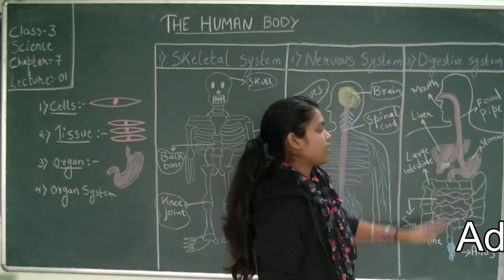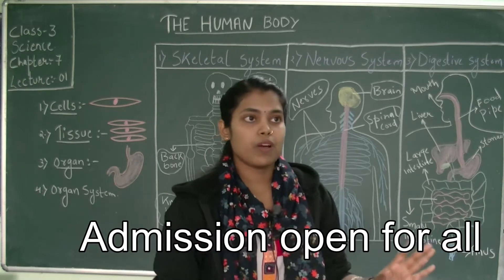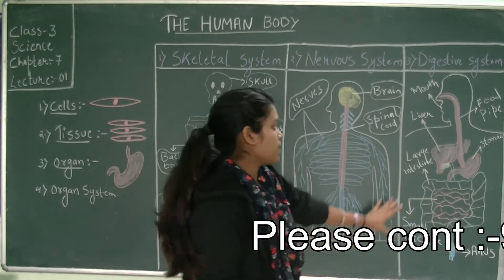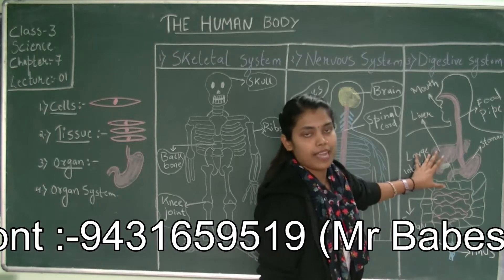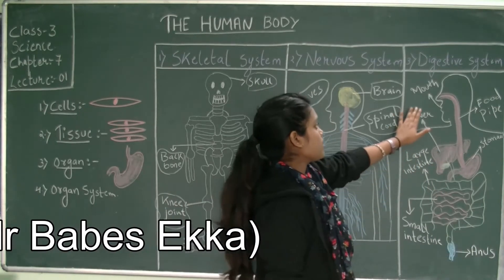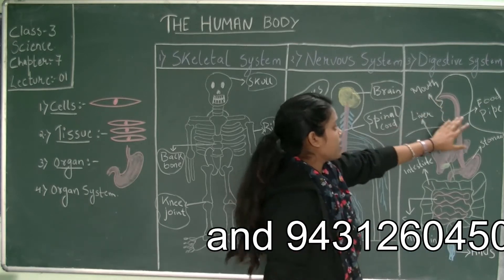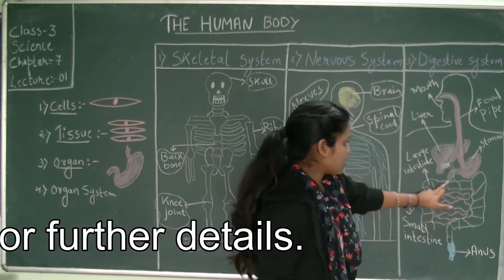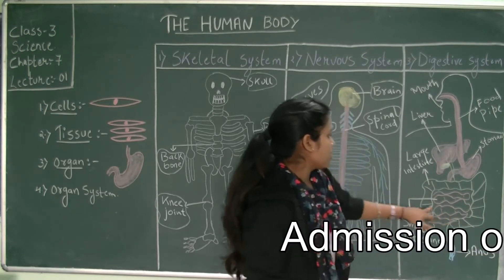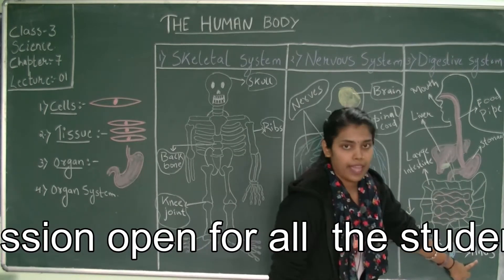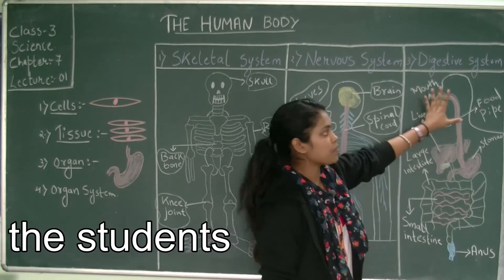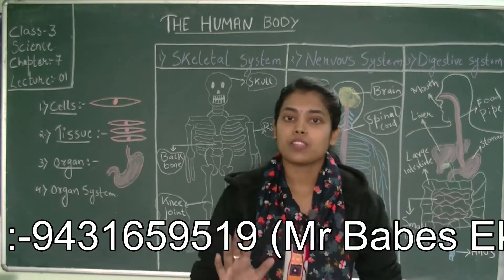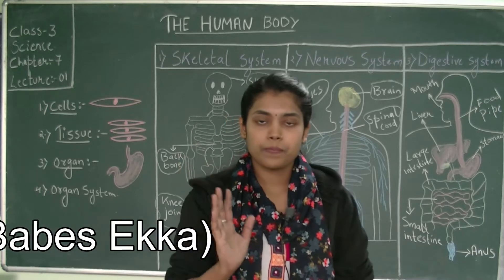Now moving forward to the digestive system. The digestive system is one of the most important organ systems, as most of the activities are taking place in it. The digestive system consists of the mouth, the food pipe, the liver, the stomach, the large intestine, the small intestine, and lastly the anus. The process by which we take in food is called ingestion.